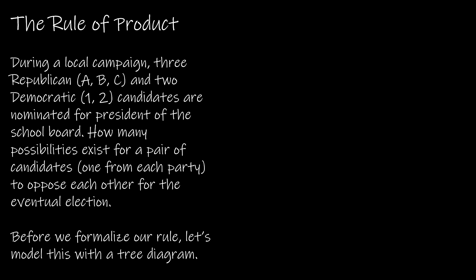So I feel good about the rule of sum. Let's take a look now at the rule of product or product rule, depending on which textbook you're looking at. During a local campaign, and now this one should look a little bit familiar to you because we have talked about this question already, but this is sort of a variation on the same question. So we have three Republican and two Democratic candidates nominated for president of the school board. How many possibilities exist for a pair of candidates, one from each party to oppose each other for the eventual election? Now, of course, we're going to use the rule of product to determine the number of ways that this could happen,